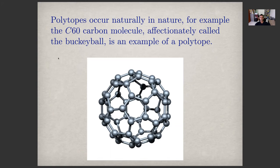Here's an example of a C60 carbon molecule, affectionately nicknamed the Buckyball, after Buckminster Fuller. And it's an example of something we'll call a simple polytope. We can also, in theory, compute its Fourier transform, its volume, et cetera, using similar methods.